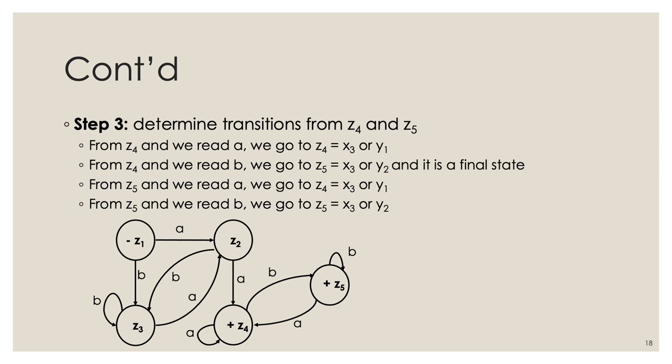We now determine transitions out of Z4 and Z5. From Z4 reading 'a' we remain in Z4. From Z4 reading 'b' we go to Z5, a new combination equal to X3 or Y2 — a final state since X3 is final. From Z5 reading 'a' we go to Z4. From Z5 reading 'b' we loop in Z5.